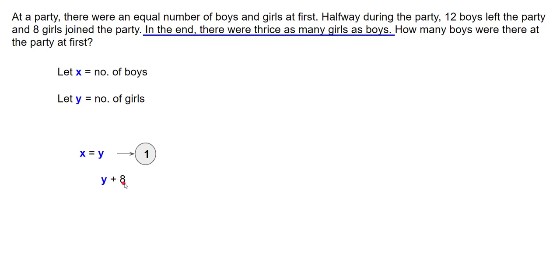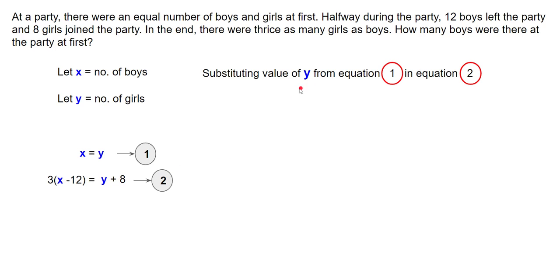After the changes, the number of girls, y plus 8, became 3 times the number of boys remaining, which is x minus 12. So our second equation is: y plus 8 equals 3 times (x minus 12). We now have two equations and need to solve them. Using the substitution method, since y equals x from equation one, we substitute x in place of y in equation two: 3 times (x minus 12) equals x plus 8.